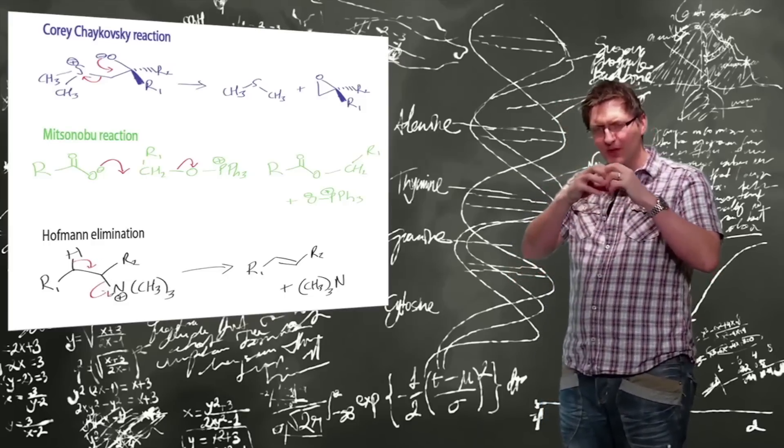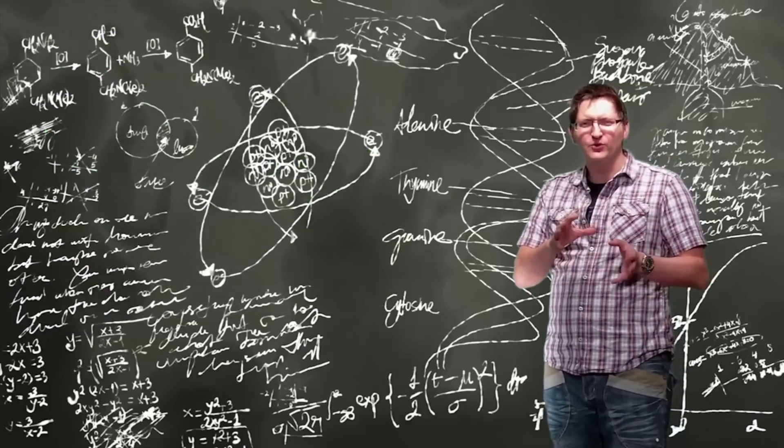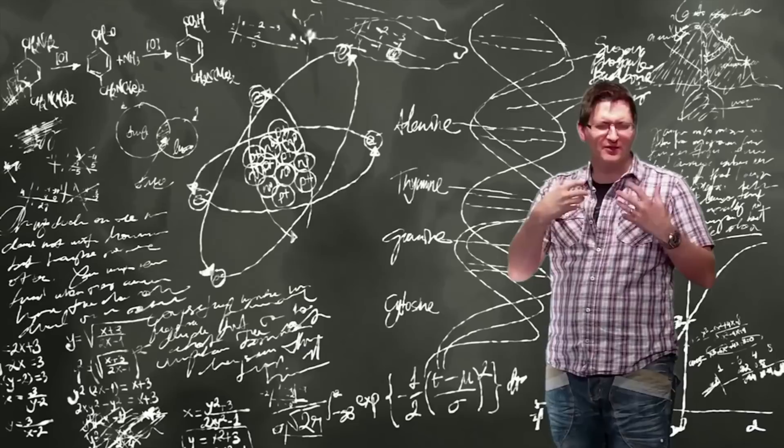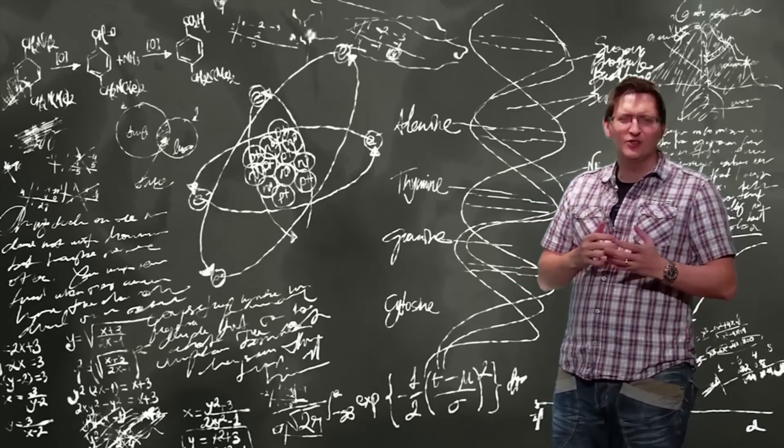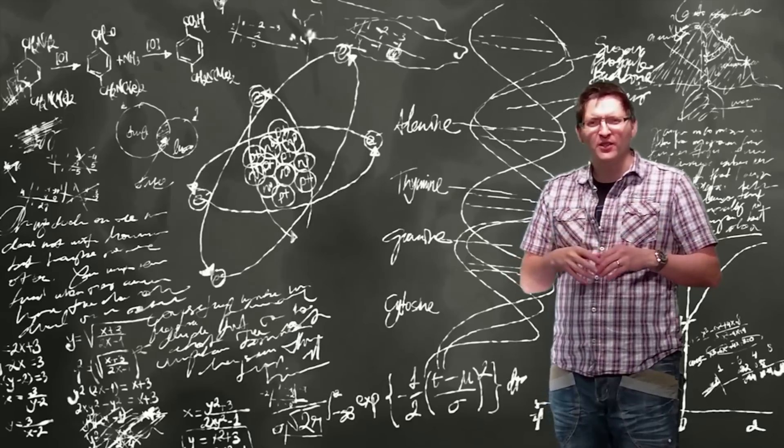Where you can have homolytic cleavage of a bond. This happens usually with some energy source such as ultraviolet radiation or something like that. A good example is across a bromine bond.